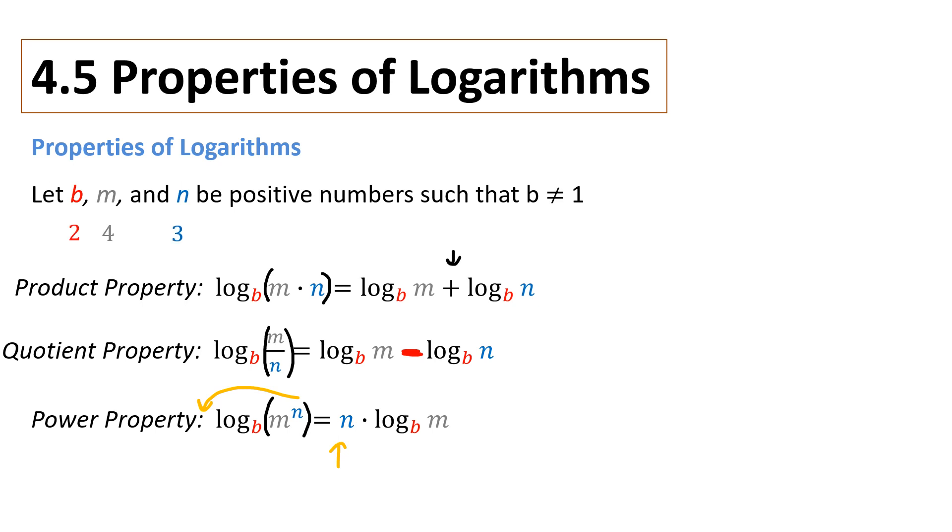We can verify this by substituting any number you want, as long as they're positive and b can't be 1. I picked 2, 4, and 3. And here's my first substitution. And if you typed that into the calculator, the left side and the right side would equal 3.585 approximately.